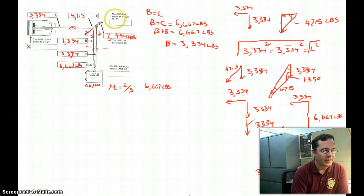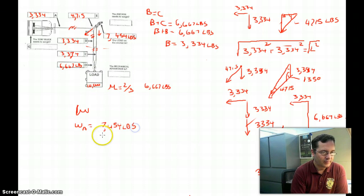And the last part of this is what does the anchor need to weigh? Well, the anchor is going to have that same coefficient of friction, two-thirds. So the anchor weight equals 7,454 pounds divided by that two-thirds.